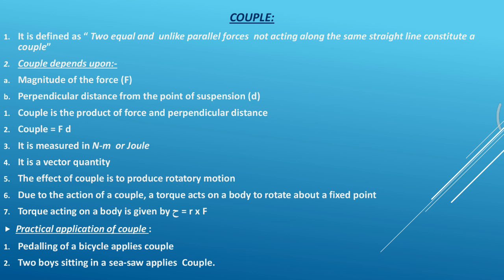It is a vector quantity and displaces in the direction of the applied force. The effect of the couple is to produce rotatory motion. Due to the action of the couple, a torque acts on a body to rotate about a fixed point. The torque acting on a body is given by tau, where tau is equal to r cross f.